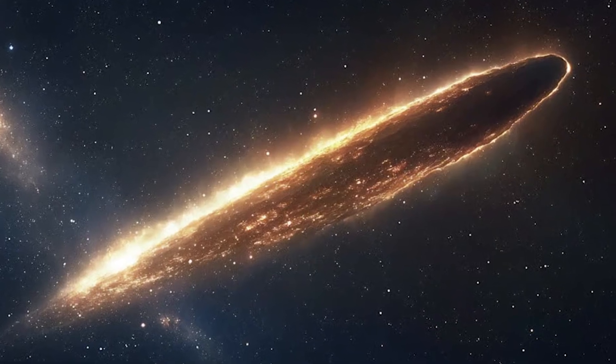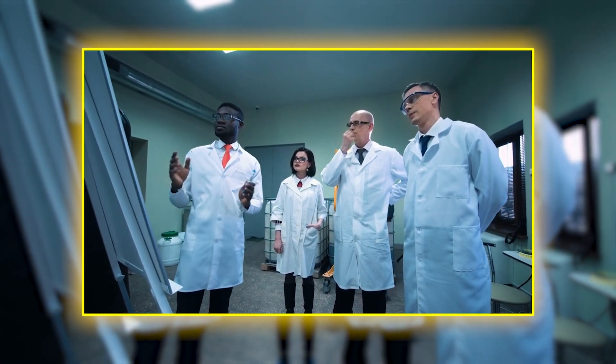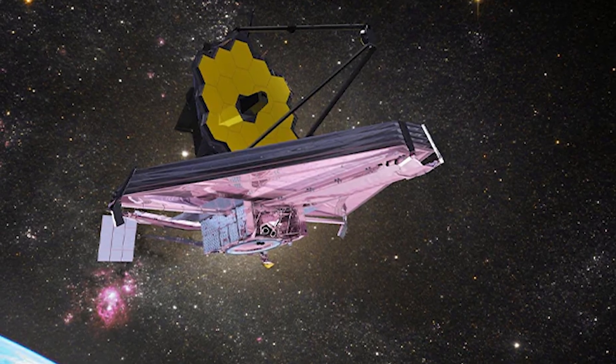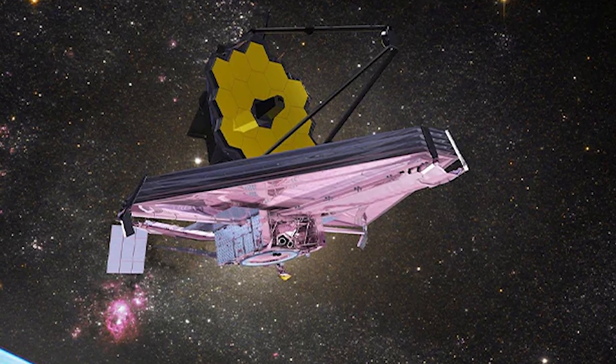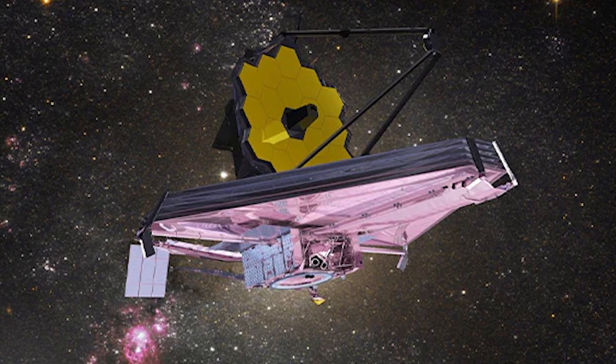Webb's instruments can analyze its composition remotely, giving researchers a window into processes that may be completely alien to our solar system. In effect, the telescope is functioning as a time machine and an interstellar probe simultaneously, pulling back the curtain on the unknown.